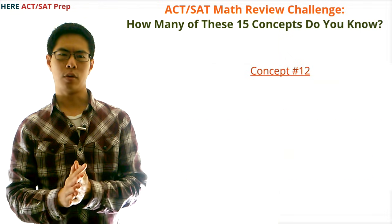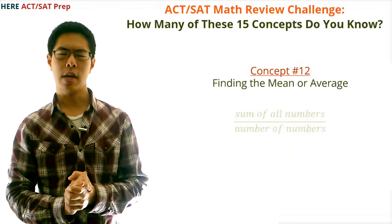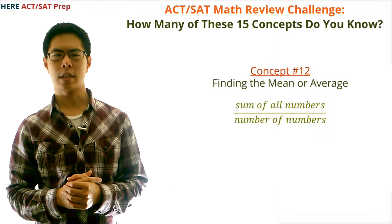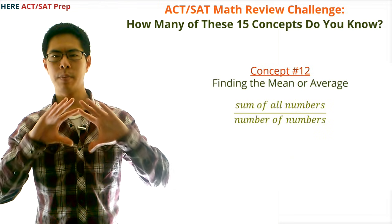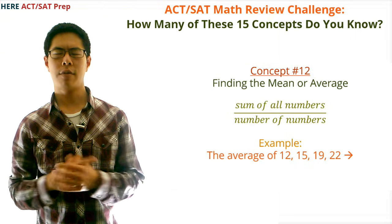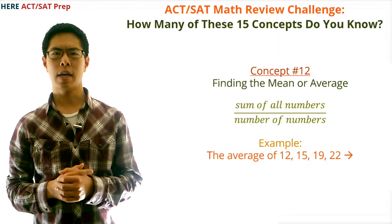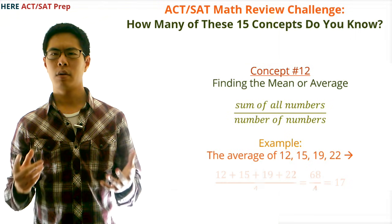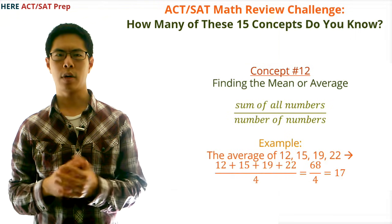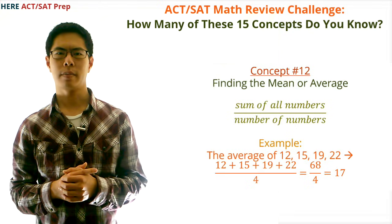Concept number twelve: finding the mean or average. The average or mean is the sum of all the numbers divided by the number of numbers. For example, the average of 12, 15, 19, and 22 is (12+15+19+22) ÷ 4 = 17.